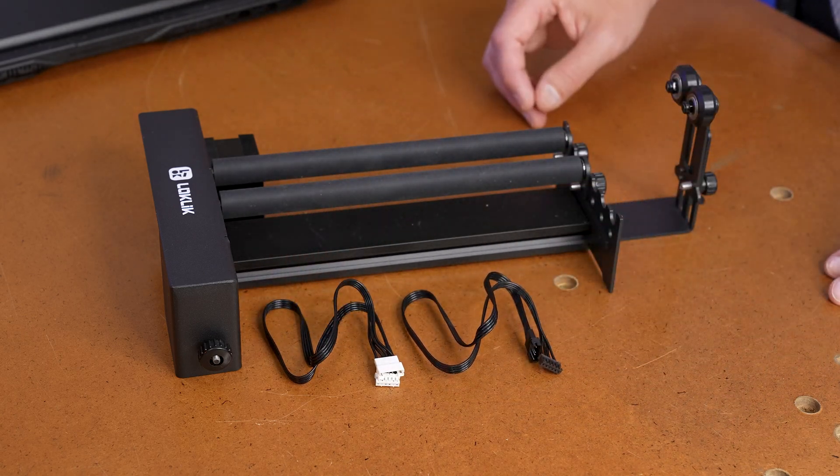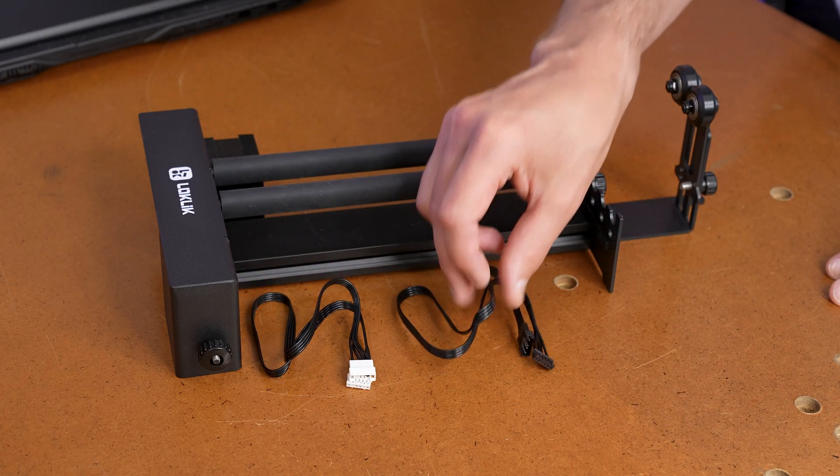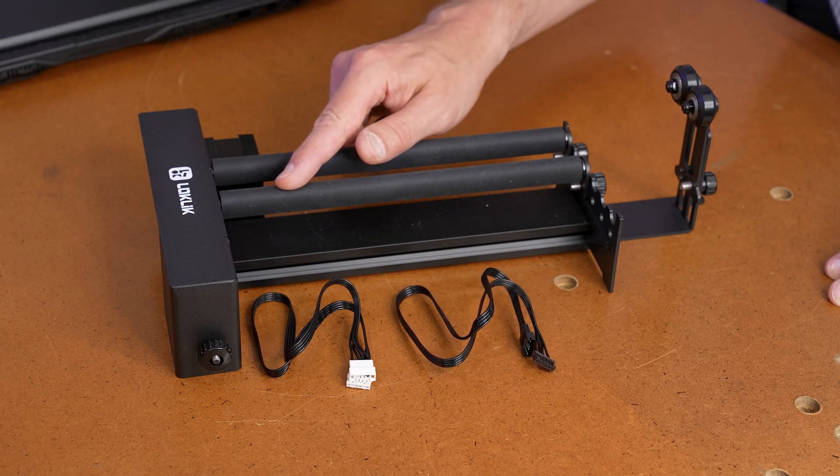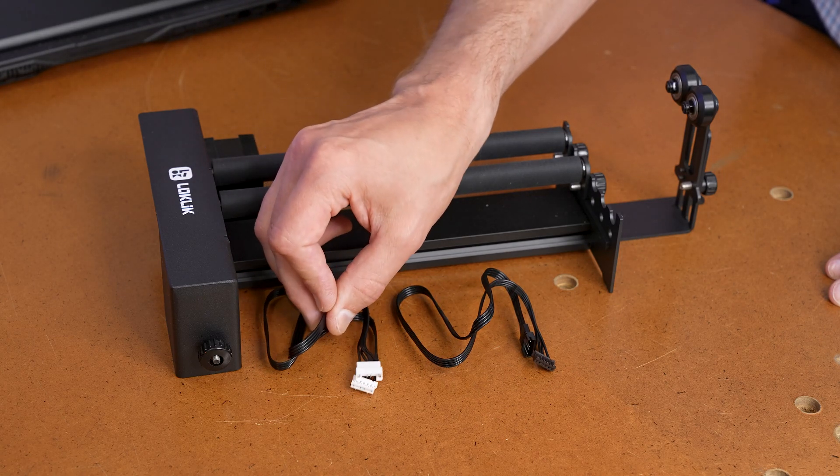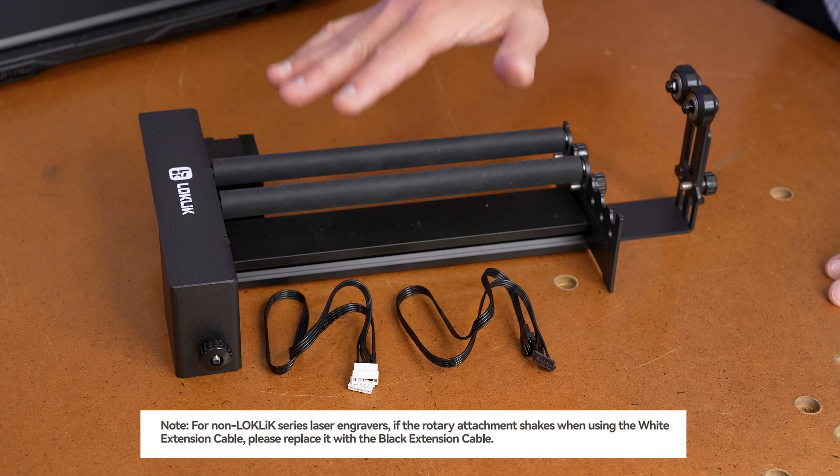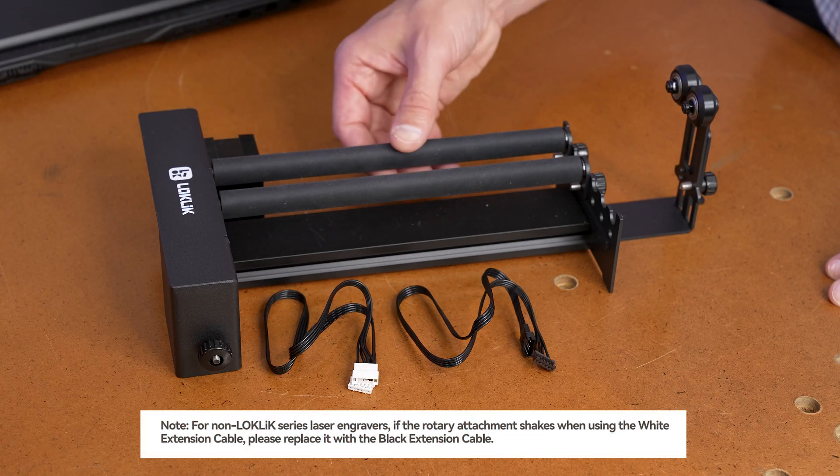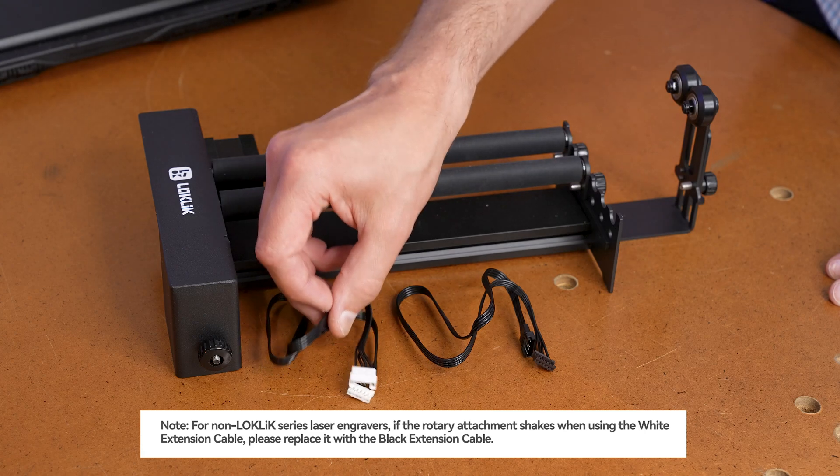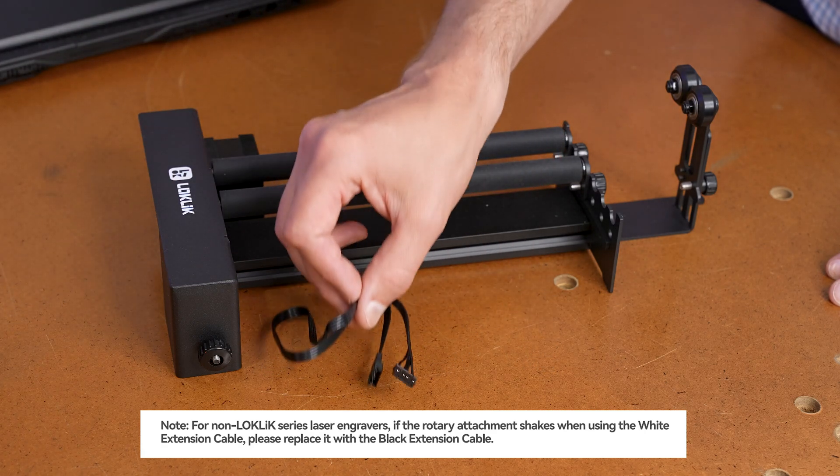Two cables are included. One has white connectors and the other has black connectors. I read ahead for the installation manual, and it recommends using the cable with the white connectors. The installation manual also goes on to say that if the motor just simply buzzes and doesn't turn the drive rollers, disconnect the cable with the white connectors and install the cable with the black connectors.